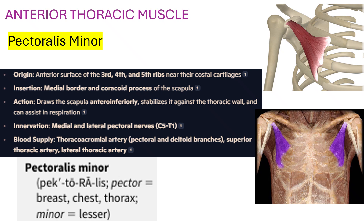Blood supply is the thoracoacromial artery — pectoral and deltoid branches — superior thoracic artery, and lateral thoracic artery. Pectoral means breast, chest, or thorax. Minor means lesser.